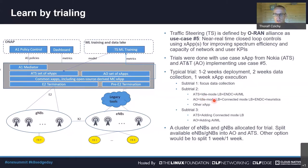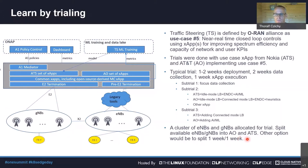On the AO side, similar things were done, but additionally with connected mode load balancing. Sub-trial two focused on heuristics. Sub-trial three added connected mode load balancing for ATS, and ML functionality for AO. For the trial, we split the available gNBs and eNBs into two groups — one allocated to AO, the other to ATS. An alternative would be to split by time, running one xApp one week and the other the next week, then comparing results.